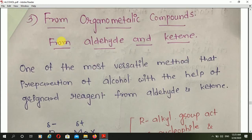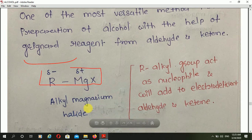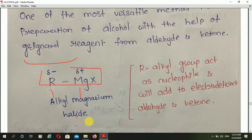Now the third preparation — from organometallic compound — which you have already studied in the chapter on aldehyde and ketone. Preparation of alcohol from aldehyde and ketone, which is one of the most versatile methods, with the help of Grignard reagent. What is the Grignard reagent? RMgX — alkyl magnesium halide — that is the Grignard reagent.